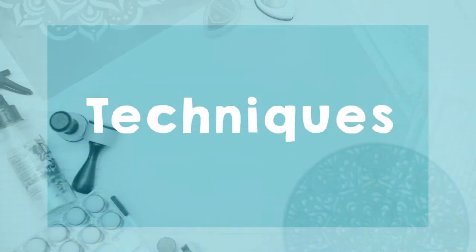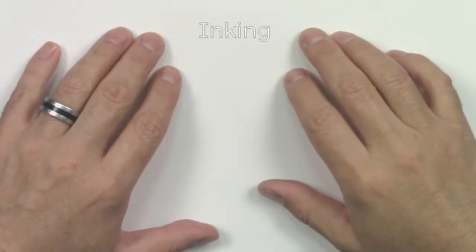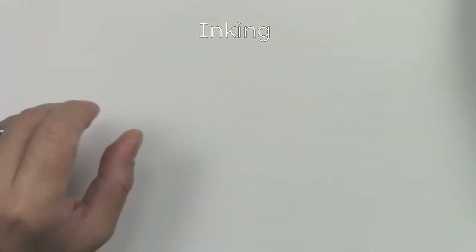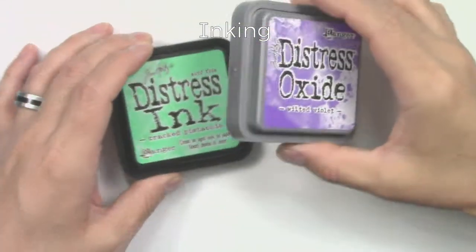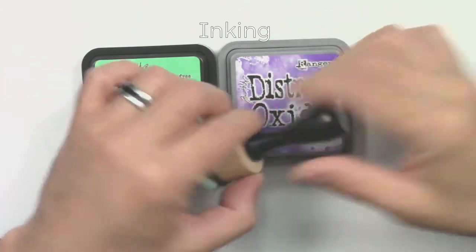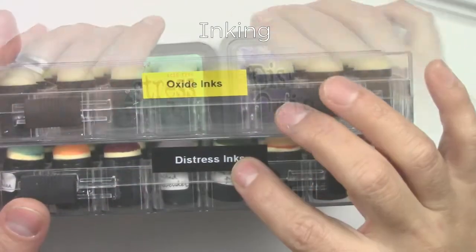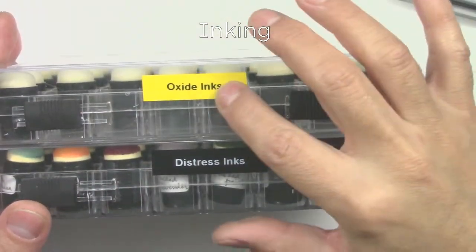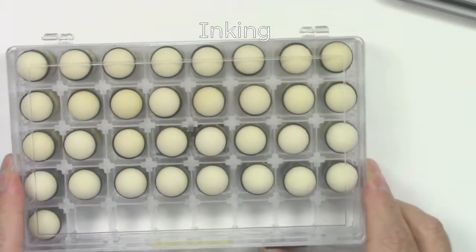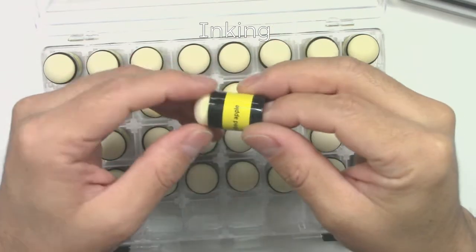Now for some techniques you can use your stencils with. First of all, there's inking. For that, you will need some color. In this case, I will be using distress inks and distress oxide inks. And you will also need some tools to apply your ink with. You can use ink blending foams like the ones from Ranger. Also, you can use sponge daubers. These are my favorite for small details. Always keep them labeled so you don't mix the colors up.